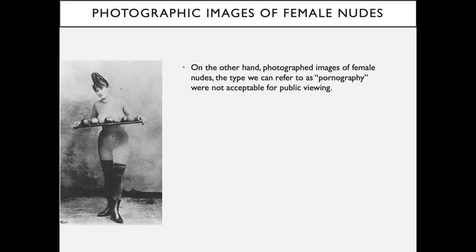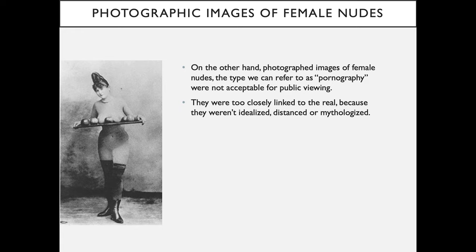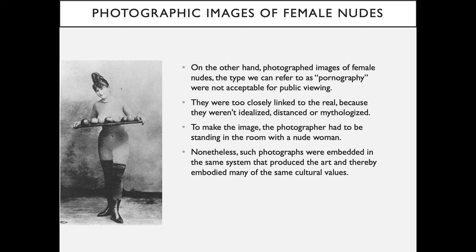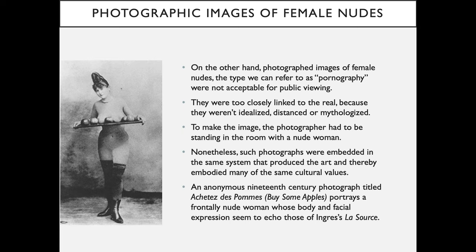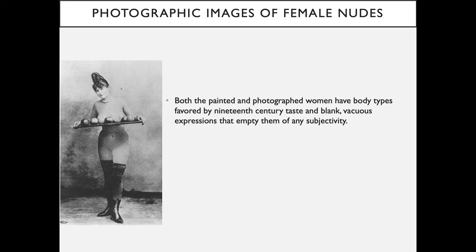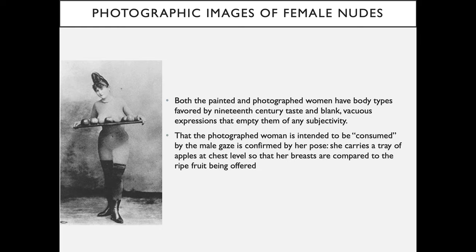On the other hand, photographed images of female nudes — the type we can refer to as pornography — were not acceptable for public viewing. They were too closely linked to the real because they weren't idealized, distanced, or mythologized; to make such an image, the photographer had to be standing in a room with a nude woman. Nevertheless, such photographs were embedded in the same system that produced the art, and thereby embedded many of the same cultural values. An anonymous 19th-century photograph labeled 'By Some Apples' portrays a frontally nude woman whose body and facial expression seem to echo those of Ingres' La Source. Both the painted and photographed women have body types favored by 19th-century taste, and blank, vacuous expressions that empty them of any subjectivity. That the photographed woman is intended to be consumed by the male gaze is confirmed by her pose: she carries a tray of apples at chest level, so that her breasts are compared to the ripe fruit being offered.